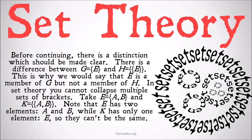So k has one element, namely e. e has two elements, a and b. So they can't be the same. The basic idea is that you can't collapse down brackets — those brackets need to stay.